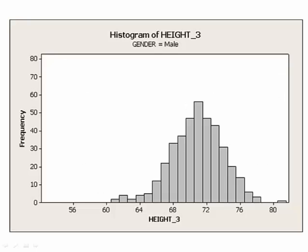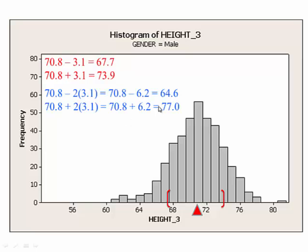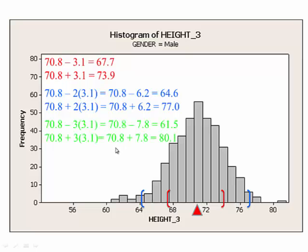Let's look at a visual. Here we have our histogram with a mean of 70.8. Going one standard deviation below and above contains 68% of the data — between 67.7 and 73.9 inches. Going two standard deviations takes us to 64.6 and 77, so 95% of the heights for males in the student survey are between 64.6 and 77 inches. And going three standard deviations gives 61.5 and 80.1, which contains approximately 99.7% of the heights, as verified in the picture.